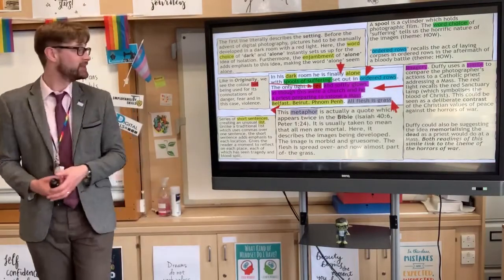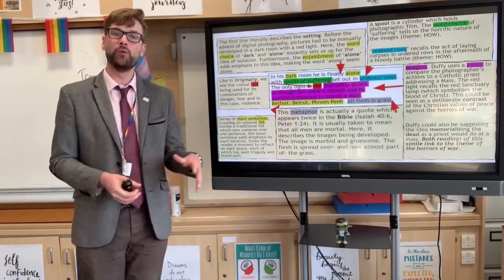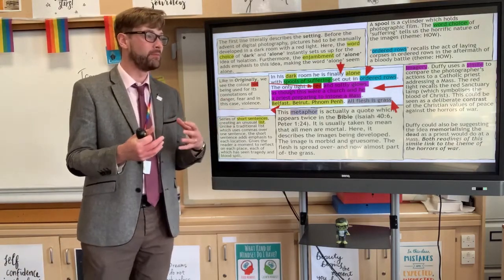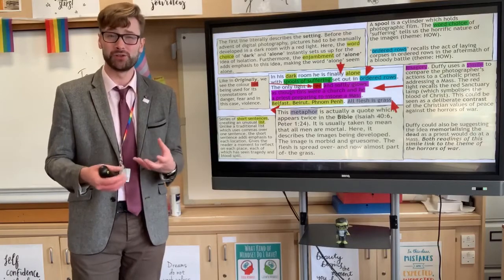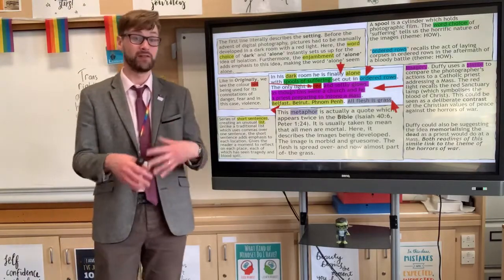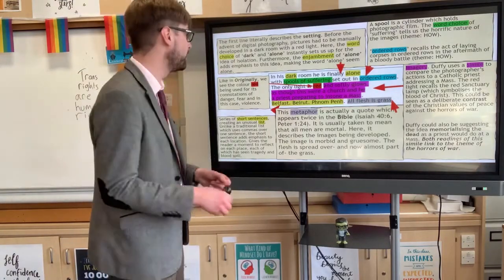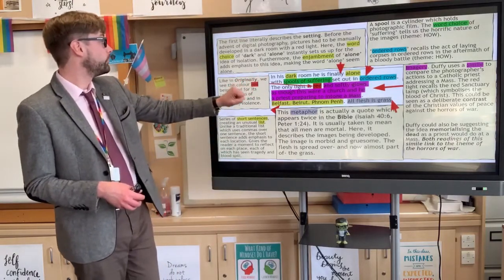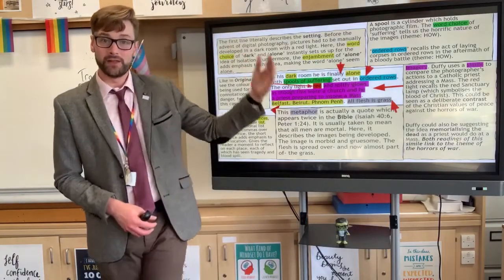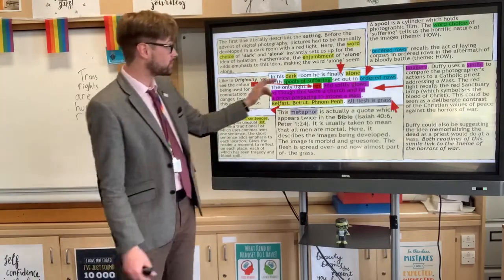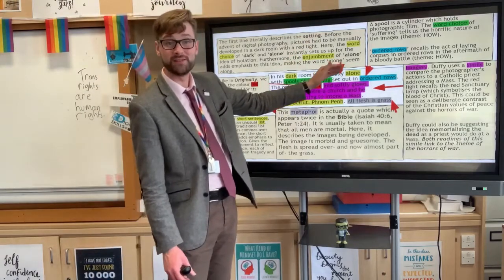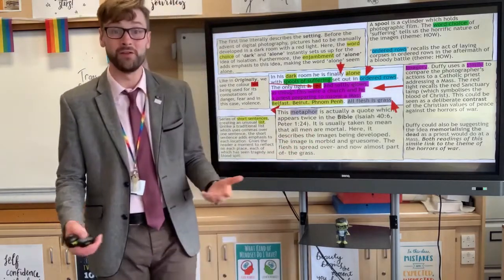So let's start off with the first line here. In his dark room, he is finally alone. Now already with the words dark and alone, you've got words which are very much associated with emotional darkness and isolation. And you find that this idea of isolation constantly creeps up in this poem. He's a very lonely figure, the war photographer, despite the fact that in some circumstances here he will be surrounded by a lot of people. Notice the enjambment here of the word alone. It's literally left on its own at the end of a line.